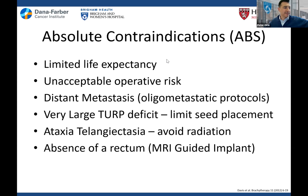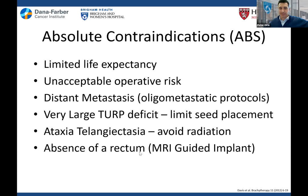Absolute contraindications include limited life expectancy, unacceptable operative risks, and very large TURP deficits. We used to say distant metastasis, but with oligometastatic protocols we're treating the prostate even with up to four lesions in the body. Radiation genetic disorders and absence of a rectum are also absolute contraindications, though patients without a rectum can be pointed toward MR-guided approaches. Prostate brachytherapy otherwise remains on the table for most patients.